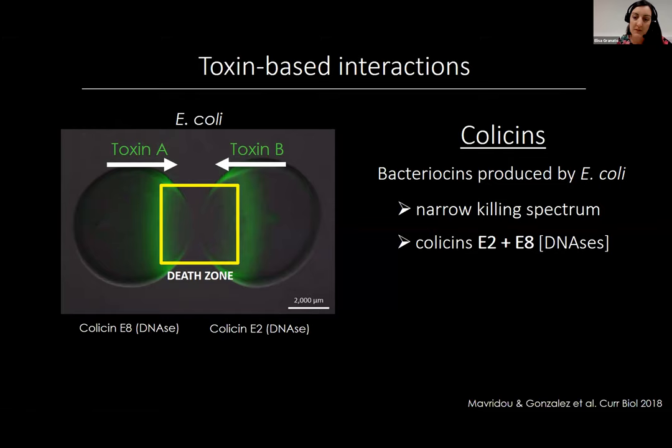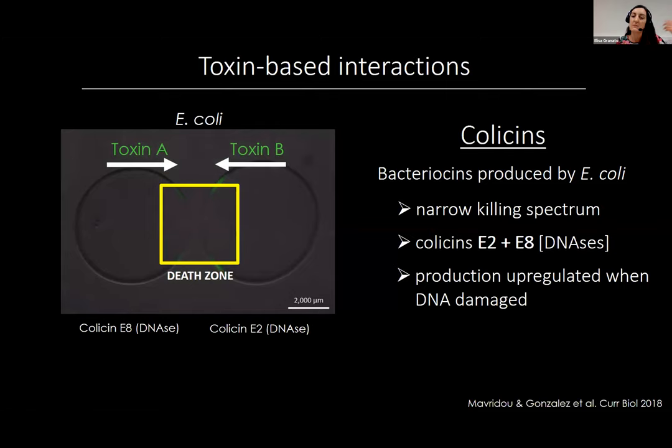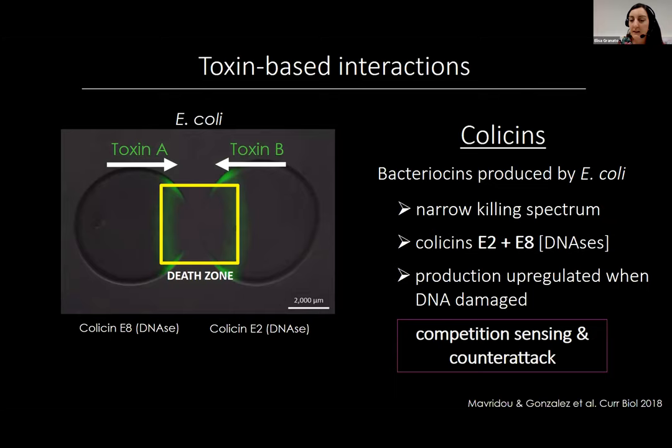These colicins are produced and upregulated when cells are sensing DNA damage. It's a feedback loop: they sense an incoming DNA toxin, they sense the DNA damage they're experiencing, and then in response they upregulate their own toxin production, which is also a DNase. So you get a positive feedback loop going between these two strains, with DNA damage as the crucial link — a way for cells to sense a competitor making a DNA toxin and mount a counterattack by producing their own toxins.